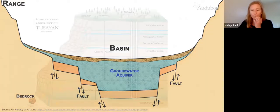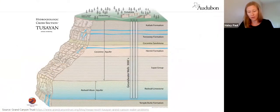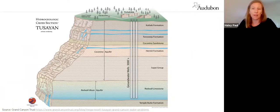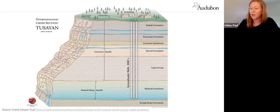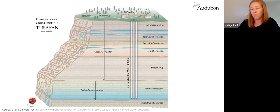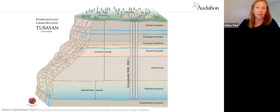In the Colorado Plateau aquifers, groundwater is also ancient and replenished by rain and snowmelt. However, instead of sandy basins collecting water, these aquifers are formed and differentiated by layers of rock and sediment that trap water in different aquifers depending on their depth. Here you can see the shallower Coconino Aquifer and the deeper Redwall Aquifer, and how groundwater in those different aquifers feeds springs out of the walls of the Grand Canyon.